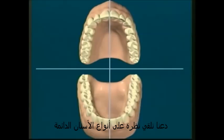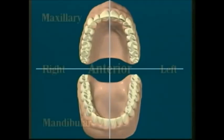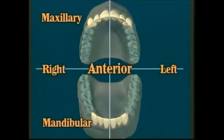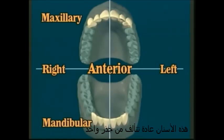There are four types of permanent, adult, or secondary teeth. The anterior teeth are made up of incisors and canines or cuspids. These usually have only one root.